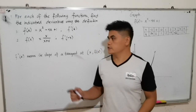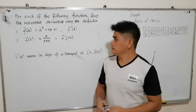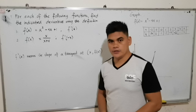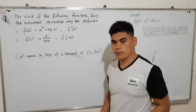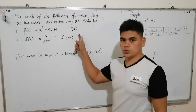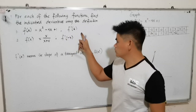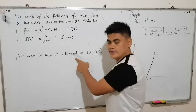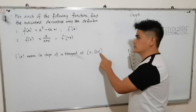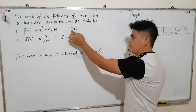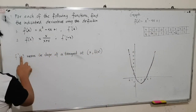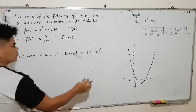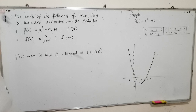Today we are going to solve two examples. For each of the following functions, find the indicated derivative using the definition. When we say derivative, that is the slope. We have the slope at 2, f prime 2. Remember, f prime of x means the slope of a tangent line at x comma f of x. So f prime 2 will be equal to the slope of a tangent at the point 2 comma f(2).